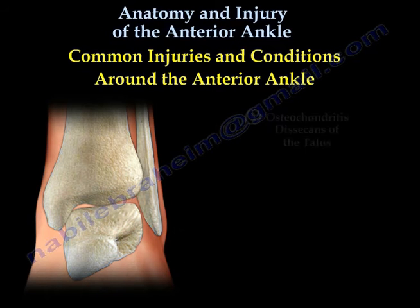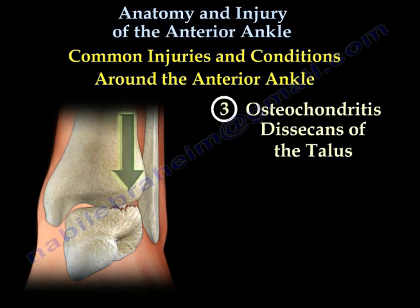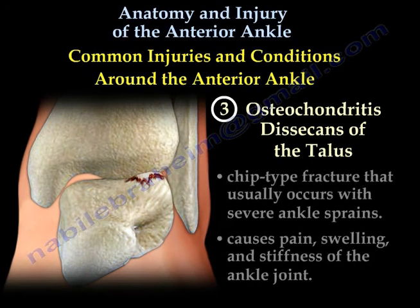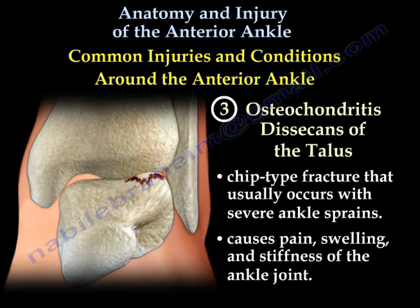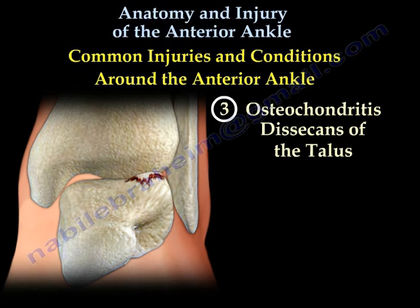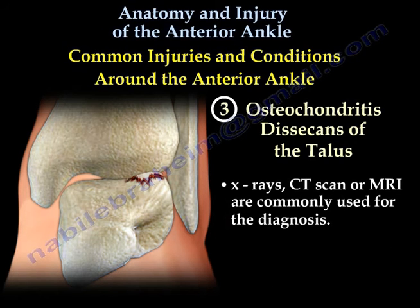The third condition is osteochondritis dissecans of the talus. This is a chip-type fracture that usually occurs with severe ankle sprains and causes pain, swelling, and stiffness of the ankle joint. X-rays, CT scan, or MRI are commonly used for diagnosis.